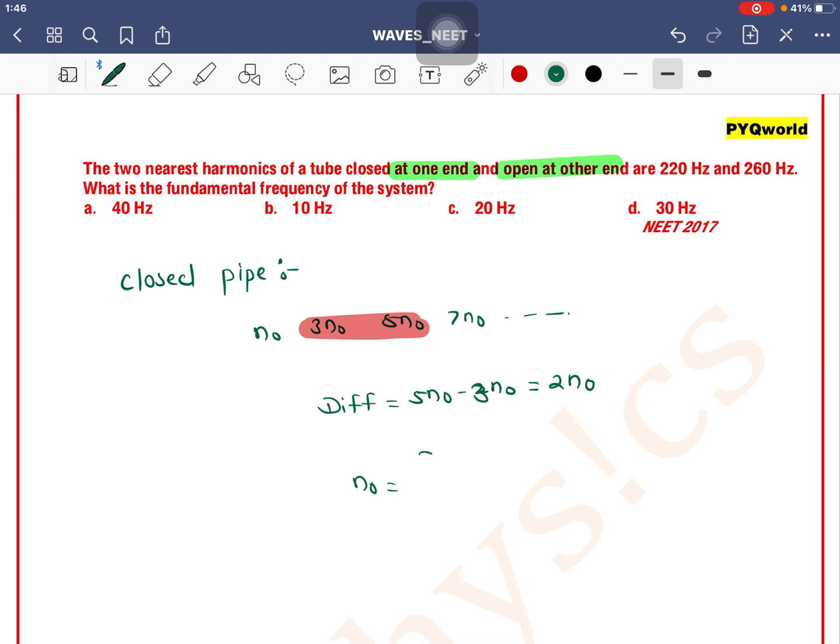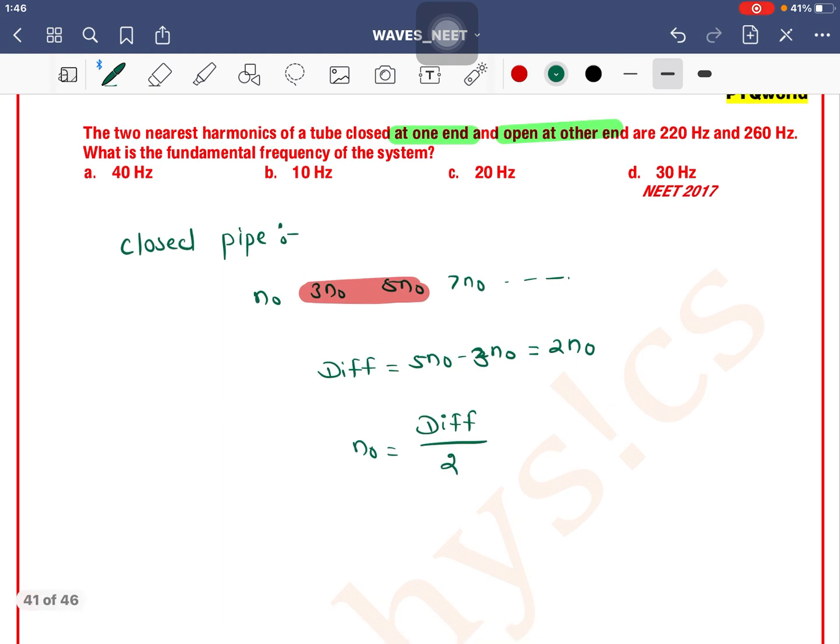So n₀ is the fundamental frequency. What is the difference? This is the difference divided by 2. Now let's see the two consecutive frequencies: 260 minus 220, divided by 2. 40 divided by 2 means 20 hertz. So 20 hertz, option C is the correct one.